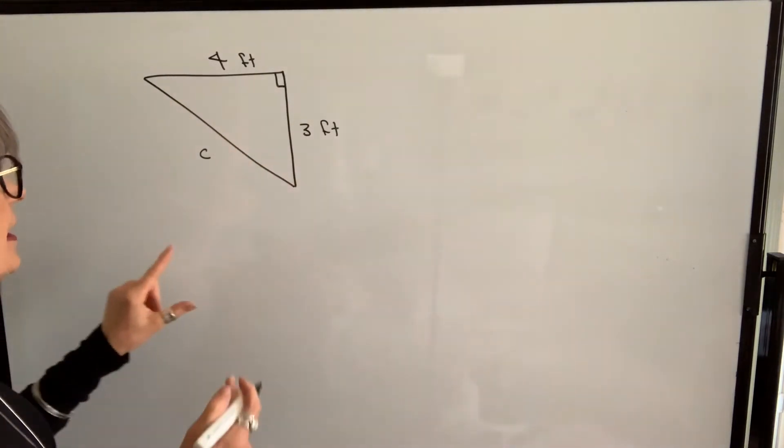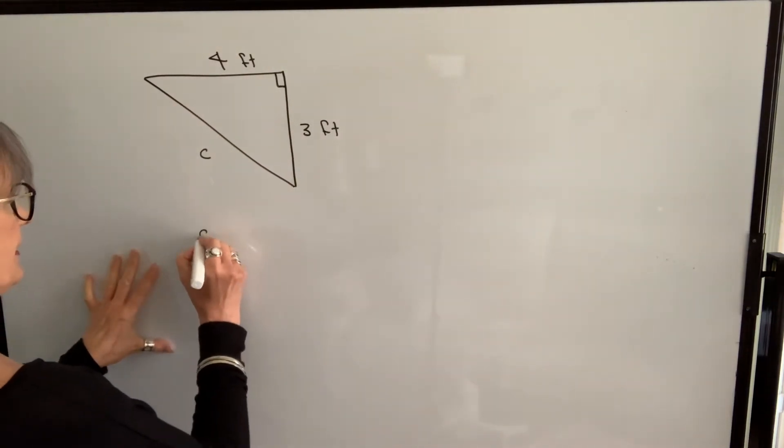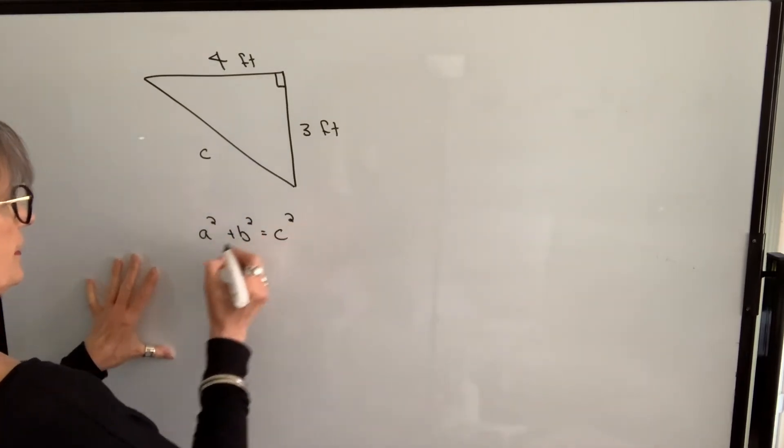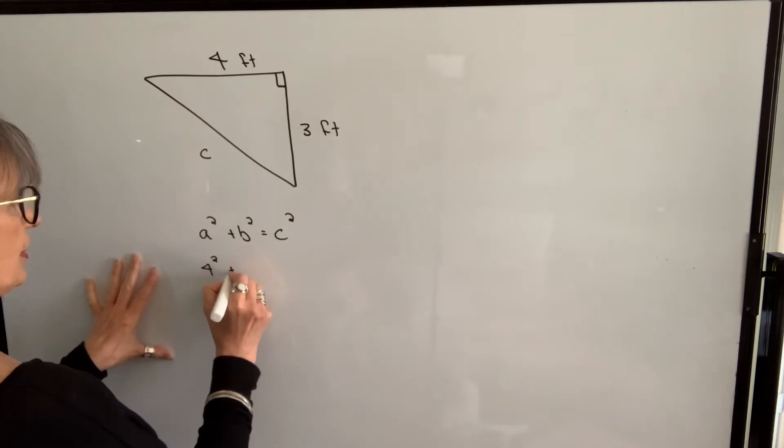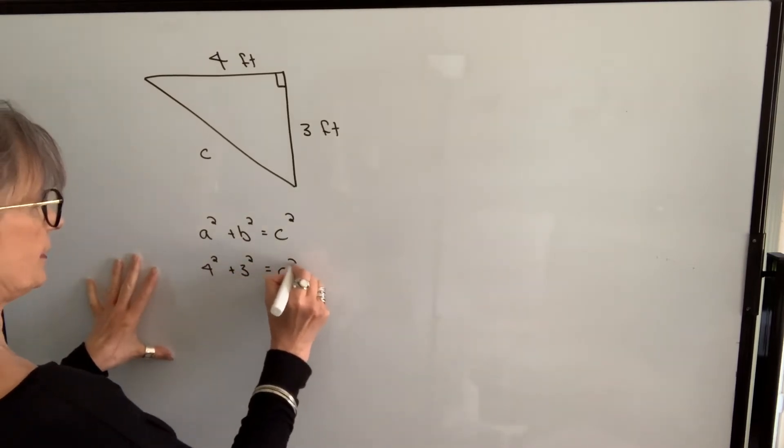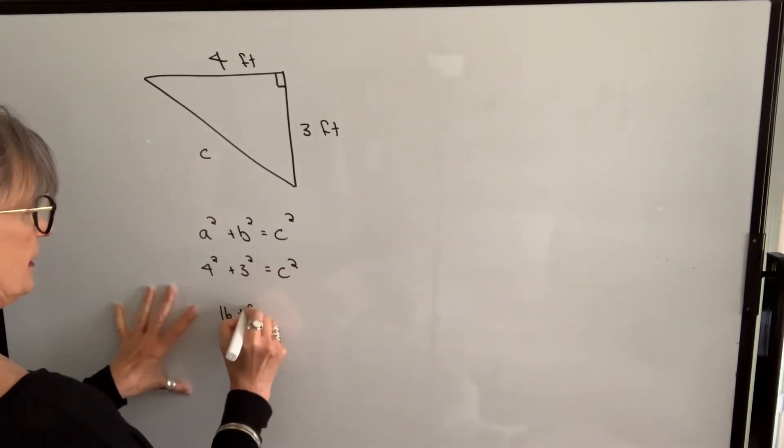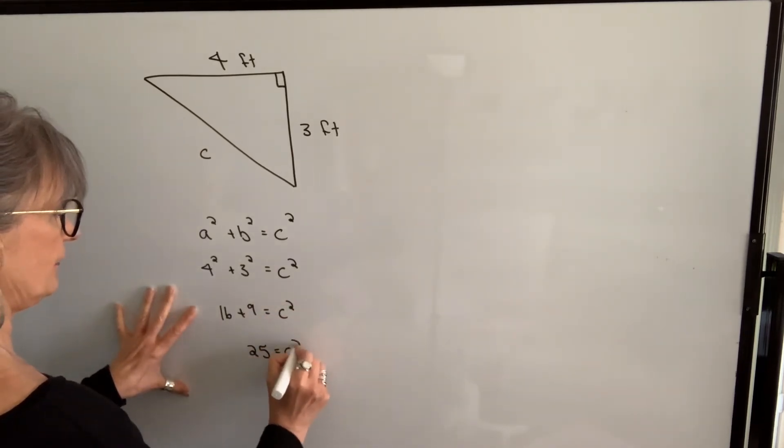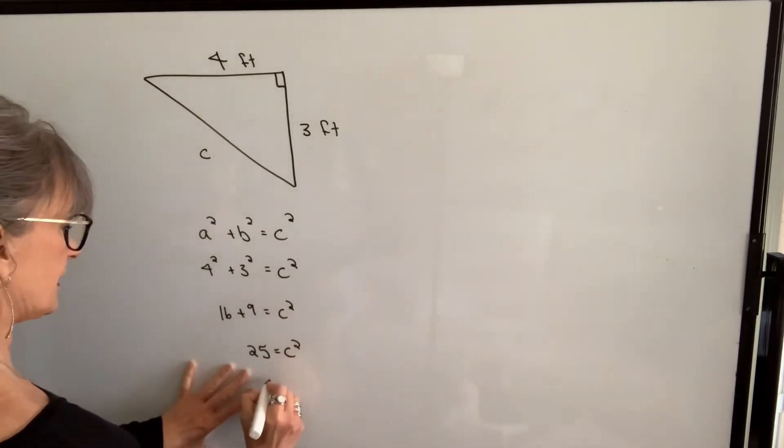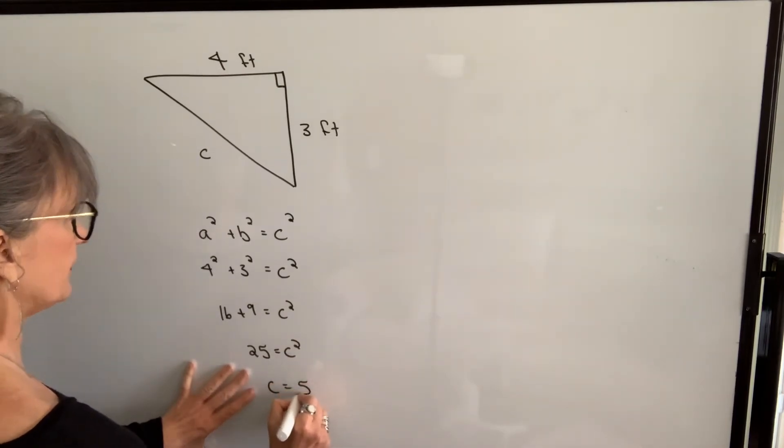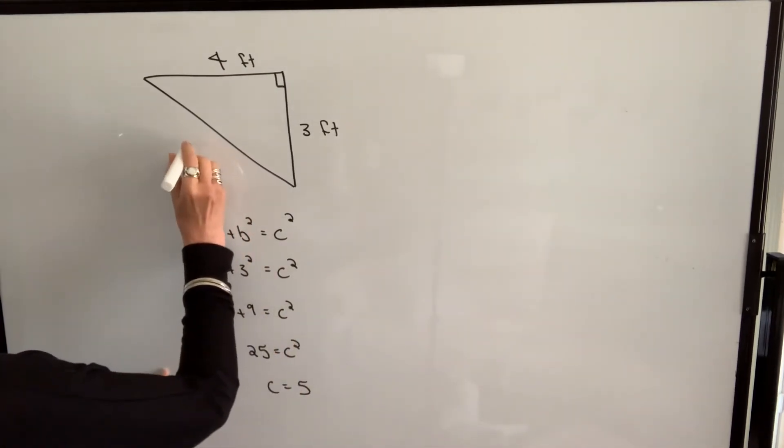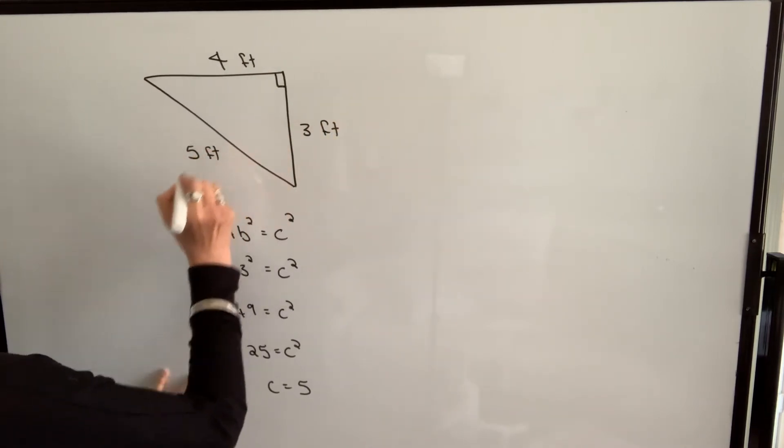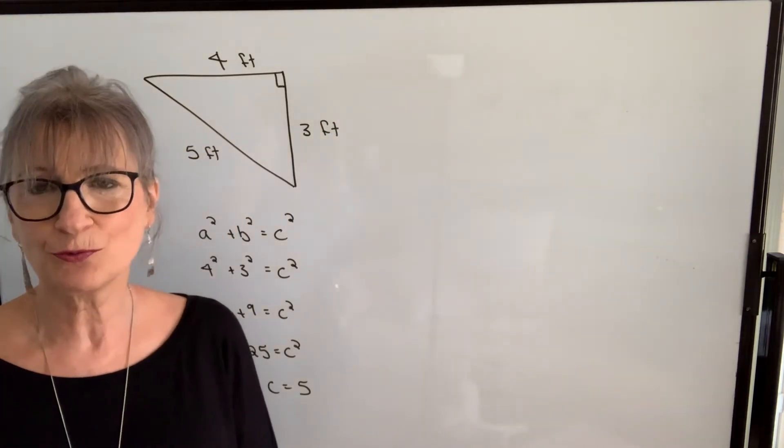Let's find c in this example. So we're going to have a squared plus b squared equals c squared. So 4 squared plus 3 squared will equal c squared. 16 plus 9 equals c squared. c squared equals 25. And when I take the square root of both sides, I get c equals 5. Because these two lengths are in feet, then this will be in feet. You've probably heard of a 3-4-5 triangle.